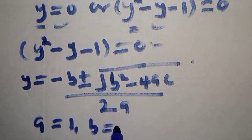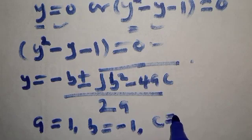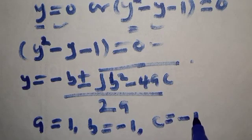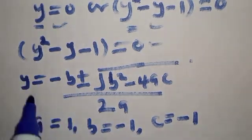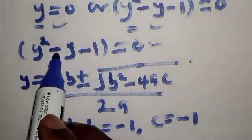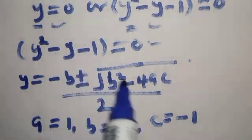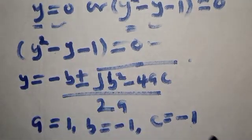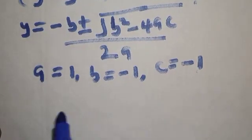From the equation y squared minus y minus 1 equals zero, we identify: a equals 1 (coefficient of y squared), b equals negative 1 (coefficient of y), and c equals negative 1 (the constant term). We now substitute these into the quadratic formula.